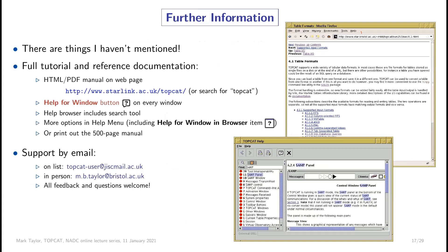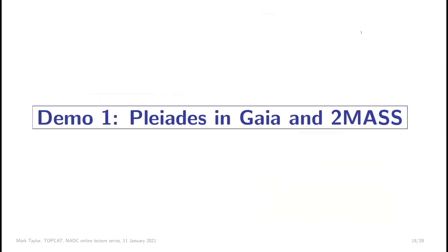That's the end of the tour of capabilities — I haven't mentioned everything, but there is documentation for everything. On the web page you can find the manual in HTML. There's also a help button on every window in TOPCAT: if you don't understand how to do something, click it and it takes you to the right part of the manual. There's also support by email via a mailing list, and I'm always happy to take personal emails too — it's very useful for me to talk to users and understand what problems they're having.